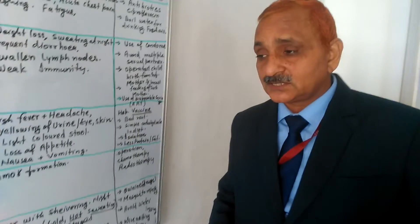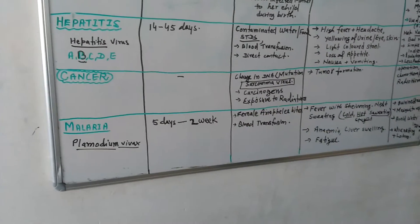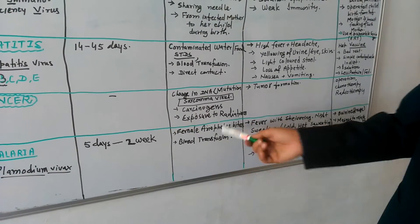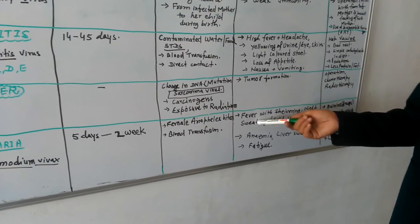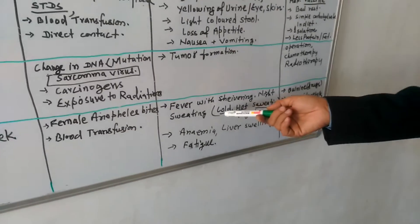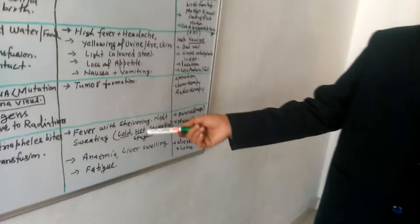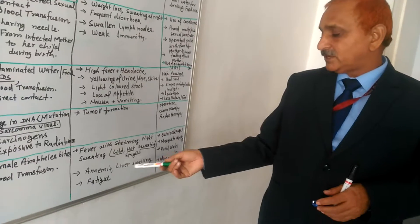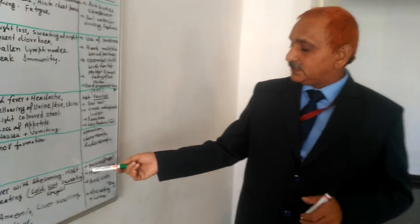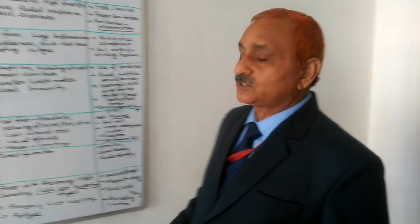Chemotherapy, radiotherapy are the remedy. Malaria is another disease caused by Plasmodium. Five days to two weeks are the incubation period. Female anopheles spread the disease or by blood transfusion it comes. Fever means shivering, night sweating, cold, hot or sweating stages. So first of all the patient feels very cold condition then become hot and then sweating. Anemia, liver and spleen swelling and febrile are the symptoms.